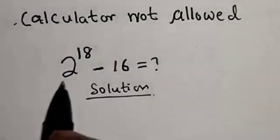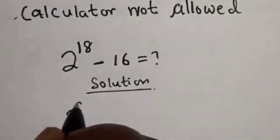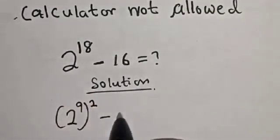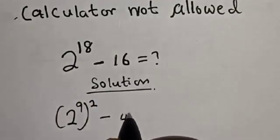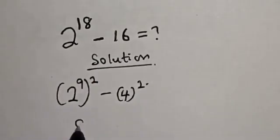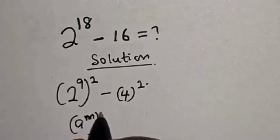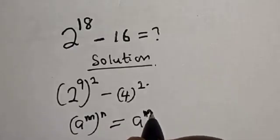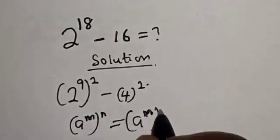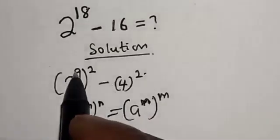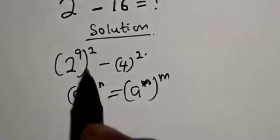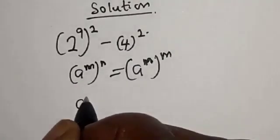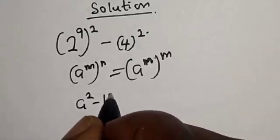2 raised to power 18 can be written as 2 raised to power 9, squared, minus 16 — which is the same as 4 squared. Using the rule that a raised to power m, raised to power n, equals a raised to power n times m: multiplying 9 times 2 gives us 18 back. So this becomes a difference of two squares.